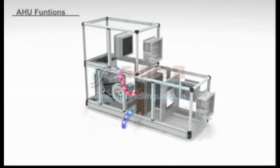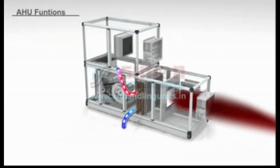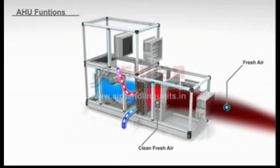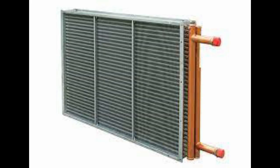The fan within the unit draws in the air through the filter and pushes it through the cooling coil to the supply duct. The heating or cooling coil in the AHU helps adjust the air temperature to the desired value.